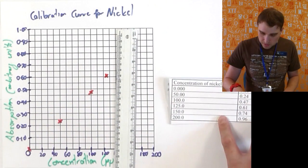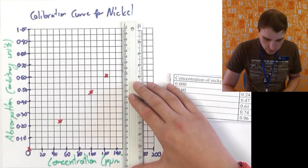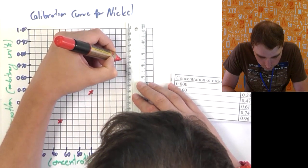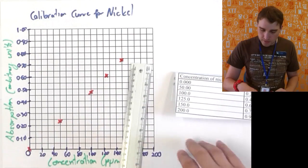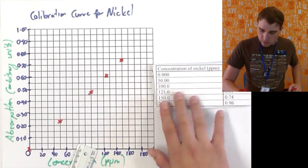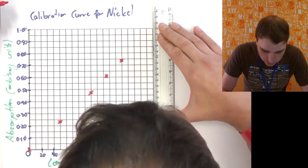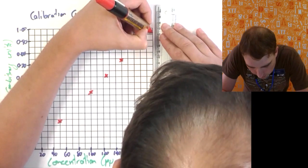Next one is 150, 0.74, so there's 150, 0.74. The last one is 200, 0.96. So 200 line over here, 0.96, just a little bit above.